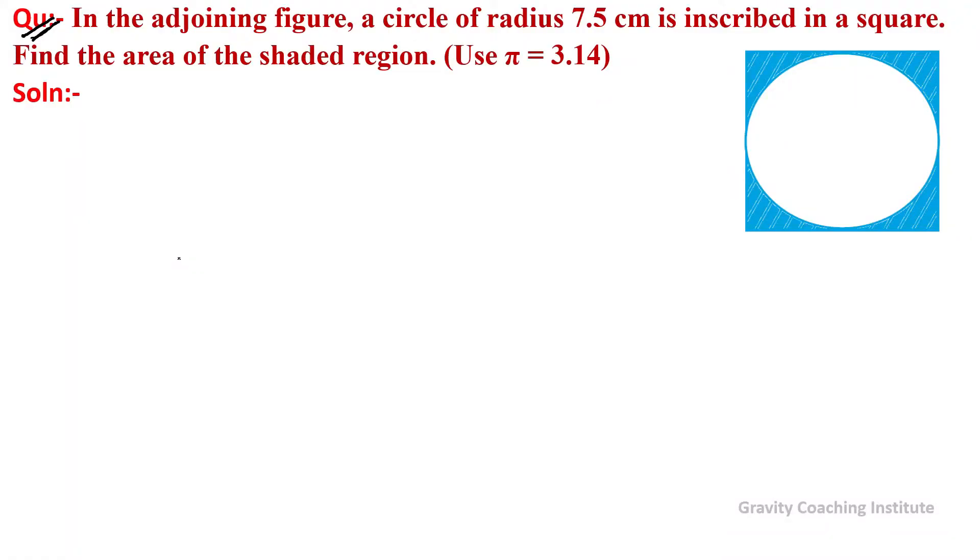In the adjoining figure, a circle of radius 7.5 cm is inscribed in a square. Find the area of the shaded region. Given: radius of the circle equals 7.5 cm.